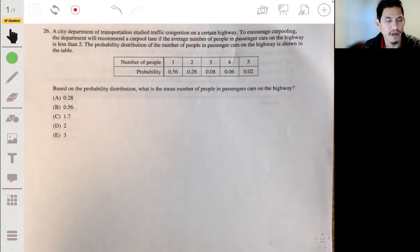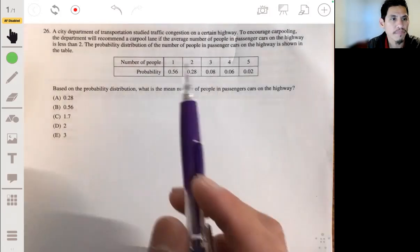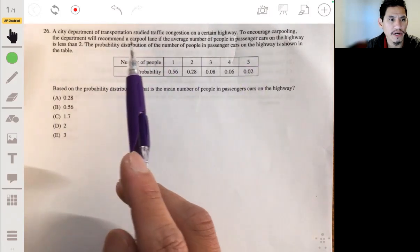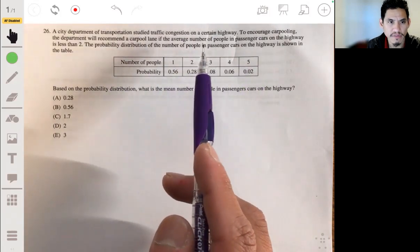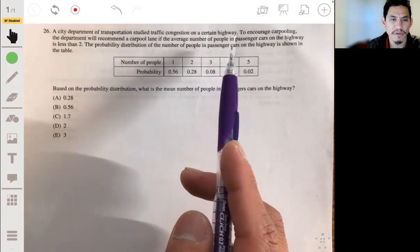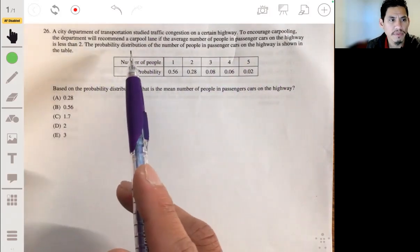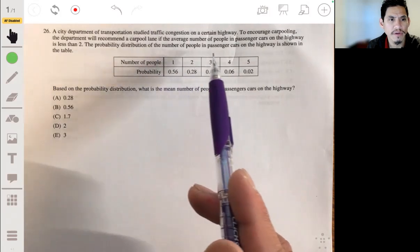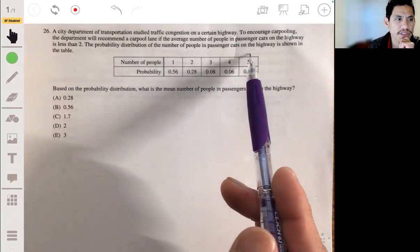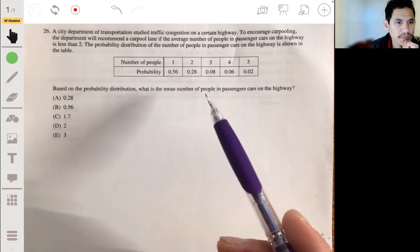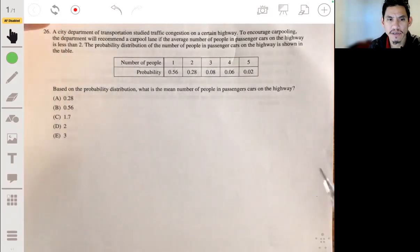Alright, problem 26. We have that a city department of transportation studied traffic congestion on a certain highway and to encourage carpooling, the department will recommend a carpool lane if the average number of people in passenger cars on the highway is less than two. The probability distribution of the number of people in passenger cars on the highway is shown in the table. Based on this distribution, what's the mean number of people in passenger cars on the highway?